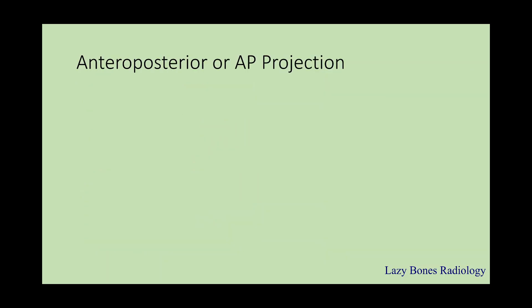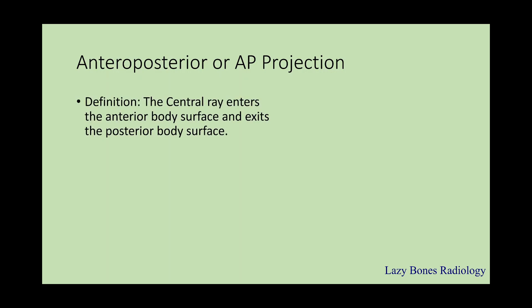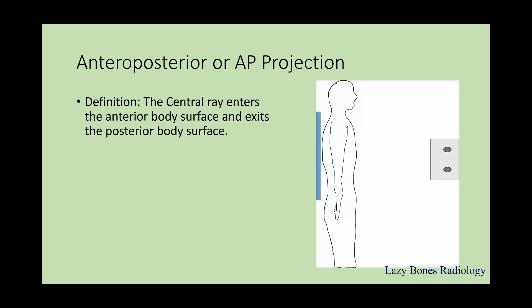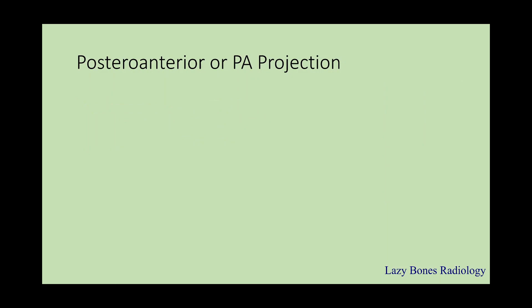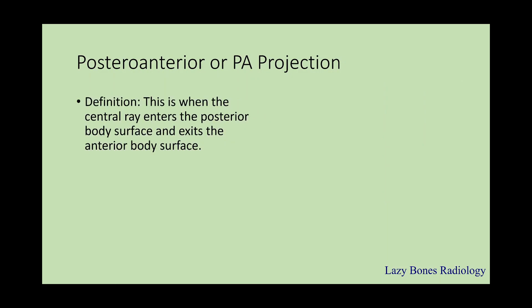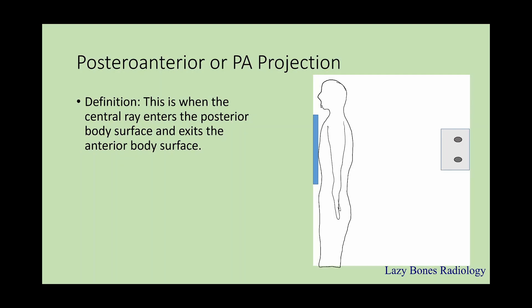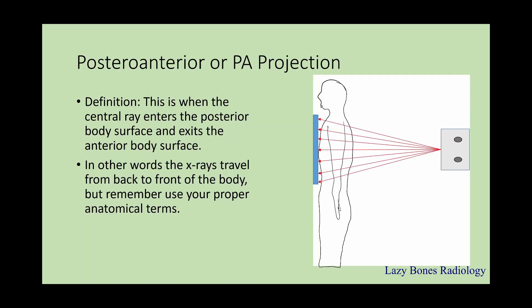Anterior-posterior or AP projection. By definition, this is when the central ray enters the anterior surface and exits through the posterior surface. In other words, this is when the x-rays travel from front to back of the body, but remember to use your proper anatomical terms. Posterior-anterior or PA projection. This is when the central ray enters the posterior surface and exits through the anterior surface. Remember to use your proper anatomical terms.